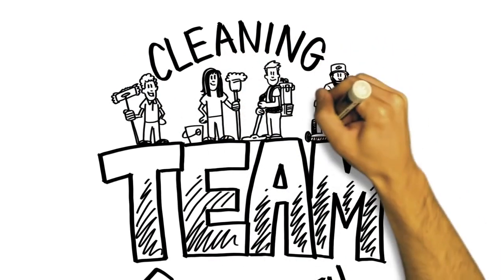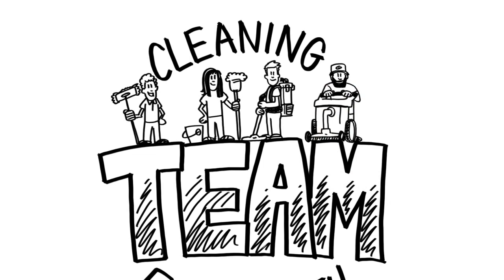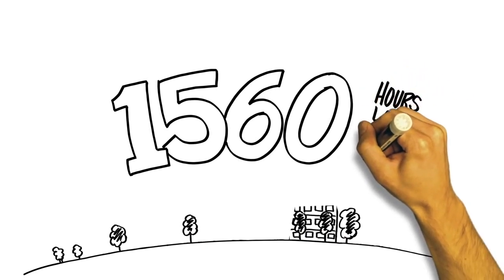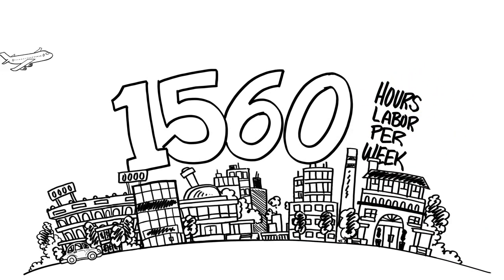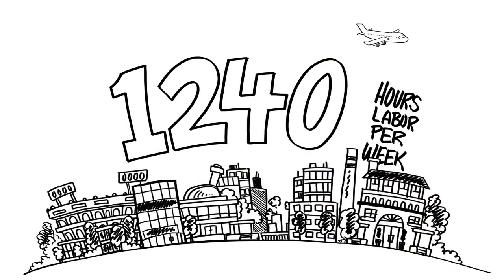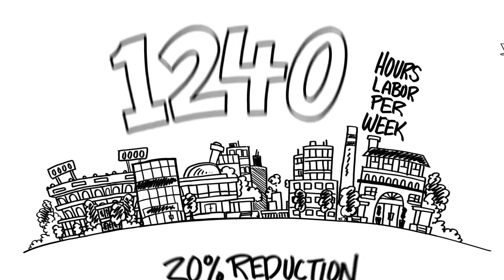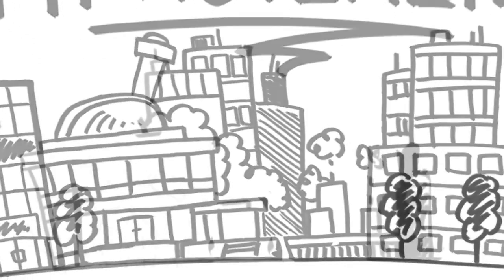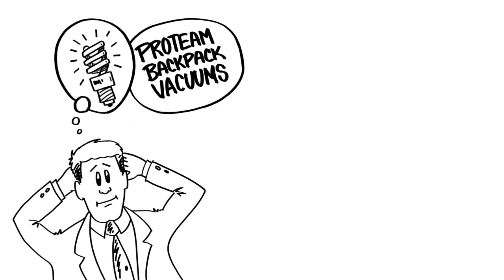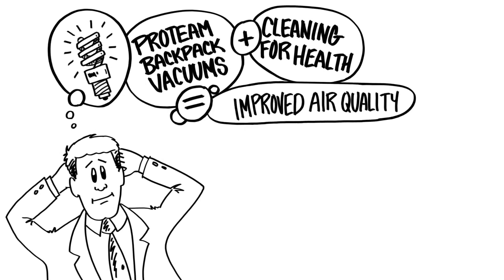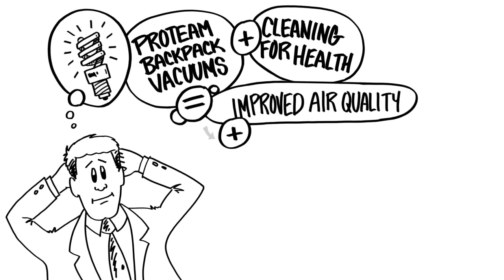Team Cleaning allows you to clean green and get more done in less time, dramatically reducing costs. One study conducted at the University of Massachusetts showed that by implementing an engineered cleaning system in their campus center, custodial functions went from 1,560 hours of labor per week down to 1,240 hours per week, a 20% reduction, and as a result, measured cleaning performance improved 200%. Imagine by simply adding ProTeam Backpack Vacuums and Cleaning for Health to your regimen, you'll immediately impact indoor air quality and improve your ability to perform more efficiently.